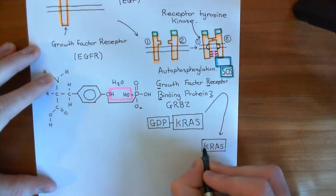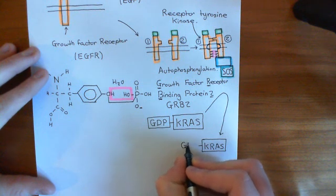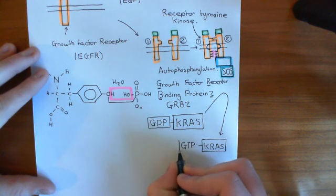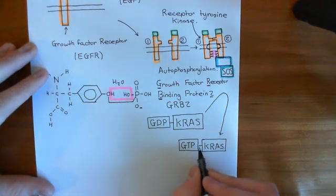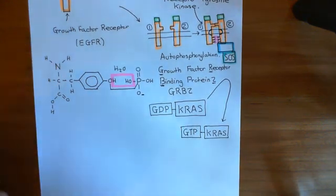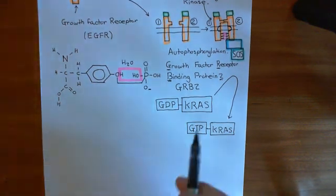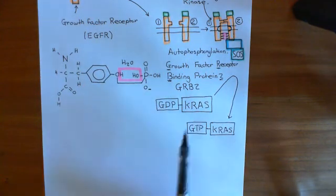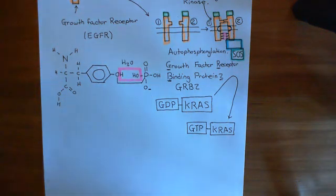KRAS is just a specific type of RAS protein. So when we discuss this MAP kinase ERK pathway in full generality, I just put RAS in this position rather than KRAS. There are many different types of RAS protein — it's a whole family of proteins which can all take this place. KRAS is a particularly famous example that's involved in colorectal cancer and lung cancer, which is why we're looking at KRAS specifically.